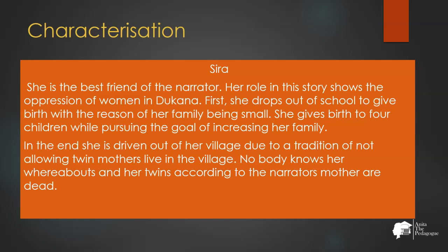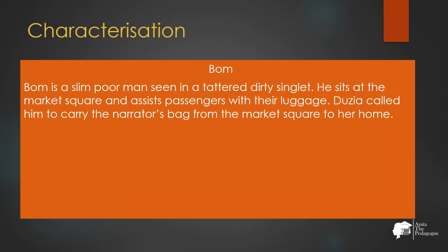She says 'to disagree was to be disloyal to communal wisdom,' and she considers her mother's counsel as law. Sira is the best friend of the narrator. Her role in the story shows the oppression of women in Dukana. First, she drops out of school to give birth because her family was small. She gives birth to four children while pursuing the goal of increasing her family. In the end, she is driven out of the village due to the tradition of not allowing mothers of twins to live in Dukana, and nobody knows her whereabouts. Her twins, according to the narrator's mother, are dead.